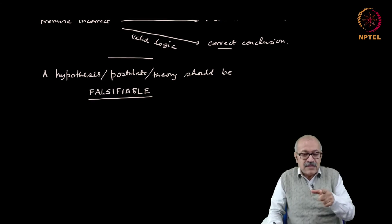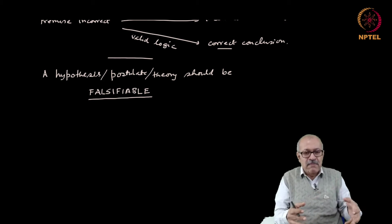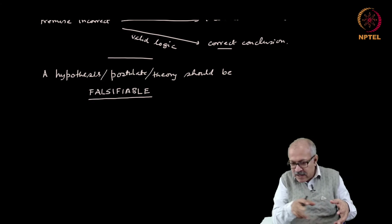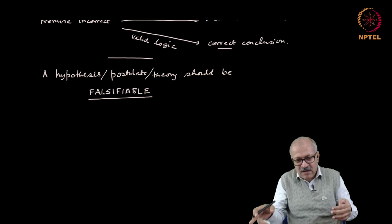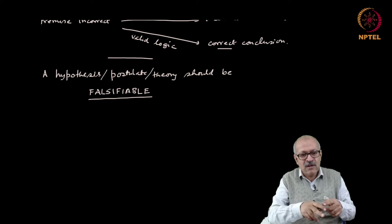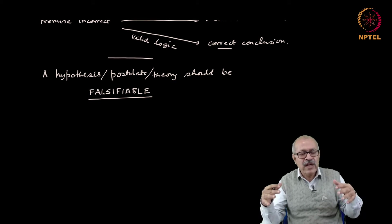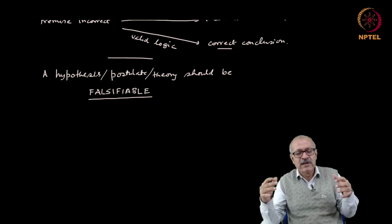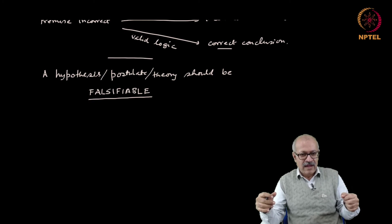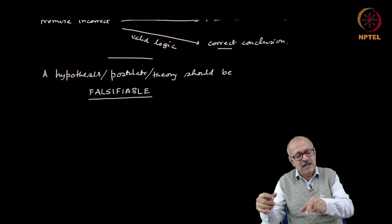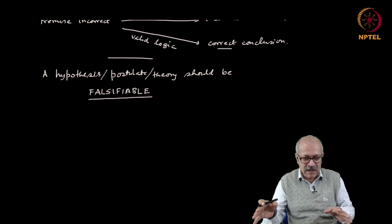For example, starting from the premise of the big bang, people predicted that one of the logical consequences of the big bang would be that there should be a low temperature microwave background radiation. And that radiation was ultimately found in 1965 by Penzias and Wilson.